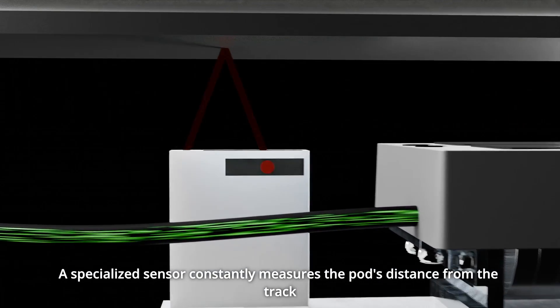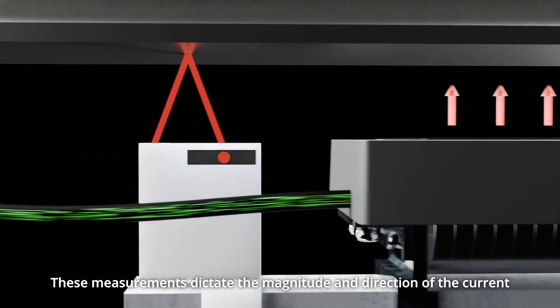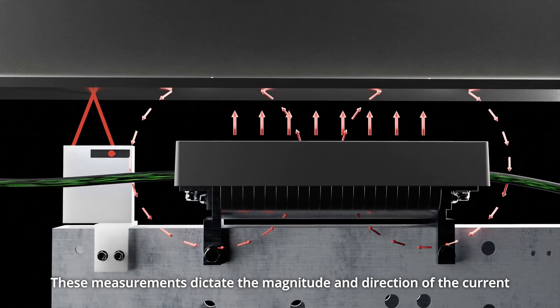A specialized sensor constantly measures the pod's distance from the track. These measurements dictate the magnitude and direction of the current.